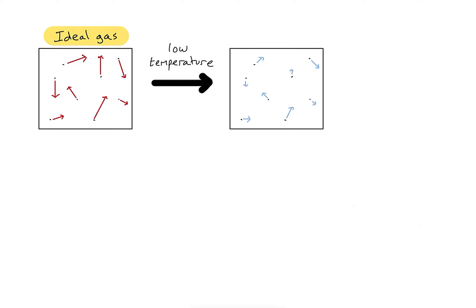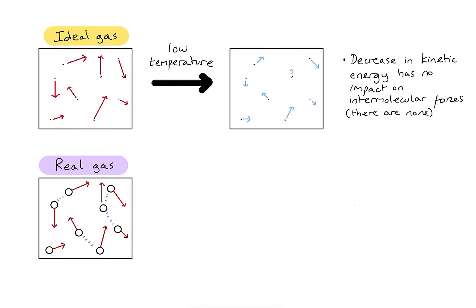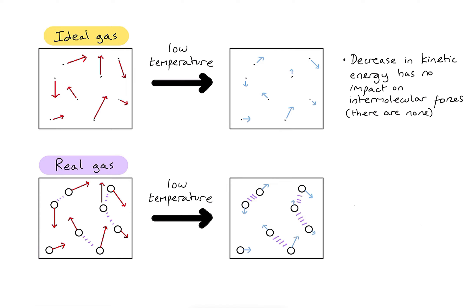In the ideal gas model, since we assume there are no intermolecular forces between particles, it doesn't matter how fast the particles are moving — there will still be no intermolecular forces. However, with a real gas cooled down, the particles move more slowly. The key fact here is that with a real gas, where intermolecular forces exist, if particles are moving more slowly they are less able to overcome those intermolecular forces, meaning the impact of intermolecular forces becomes more significant.